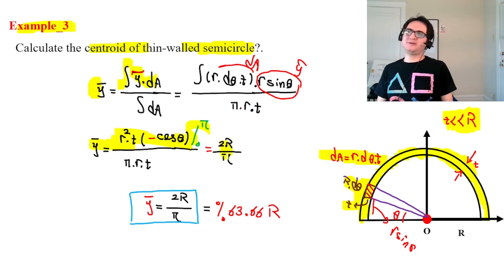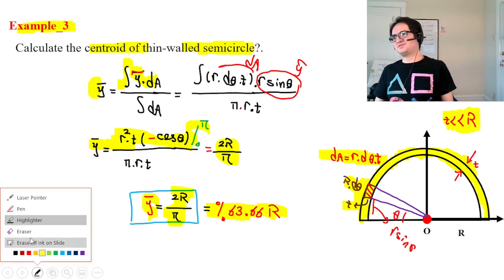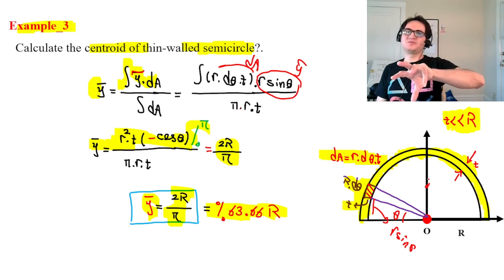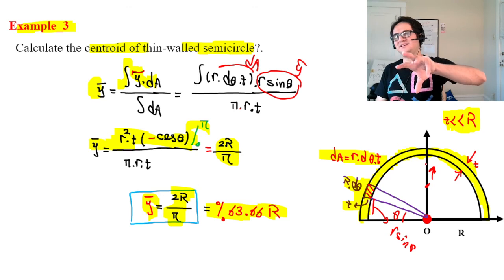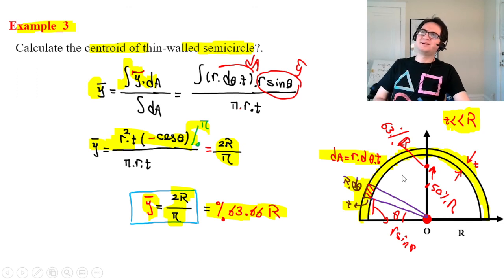For the thin-wall semicircle, y-bar equals 2R over pi, which is approximately 63.66% of r. This is interesting — without mass in the interior, the centroid rises above the 50% mark, landing at 63% of R.